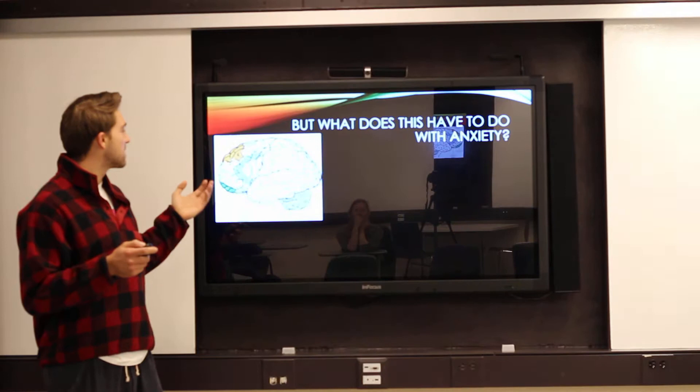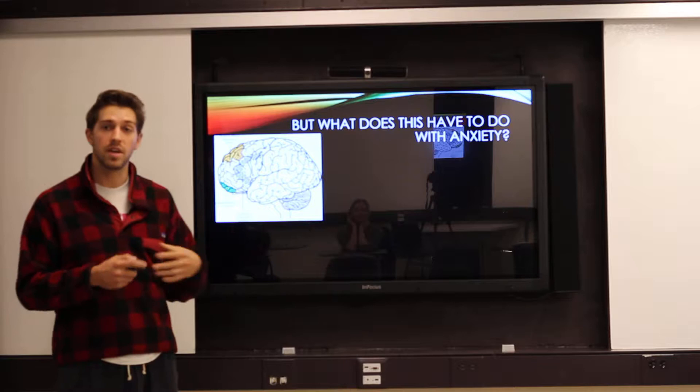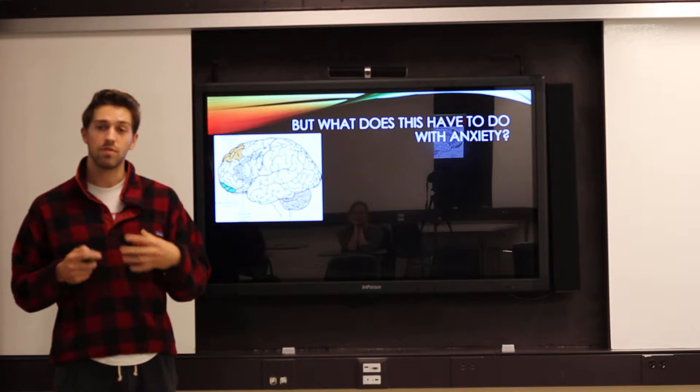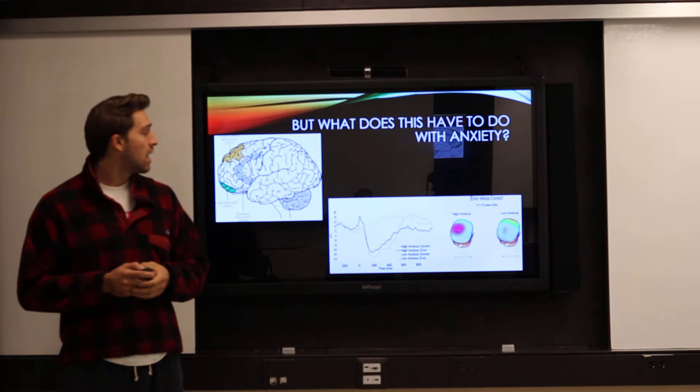But, what does this have to do with anxiety? The main reason is that most of the error monitoring occurs in the same location in the brain, in particular, the anterior cingulate cortex that also has to do with attentional control theory. So, anxiety, because it's increasing your vigilance to new sources of internal threat, will increase your overall error monitoring.